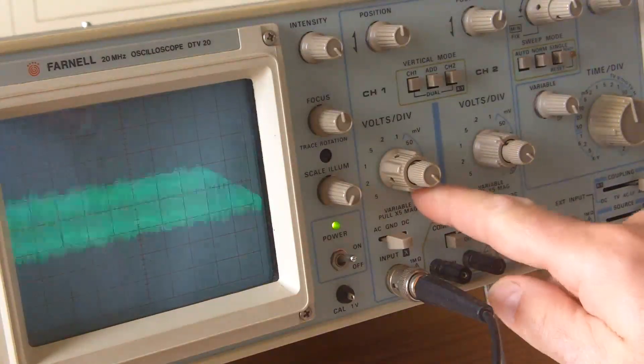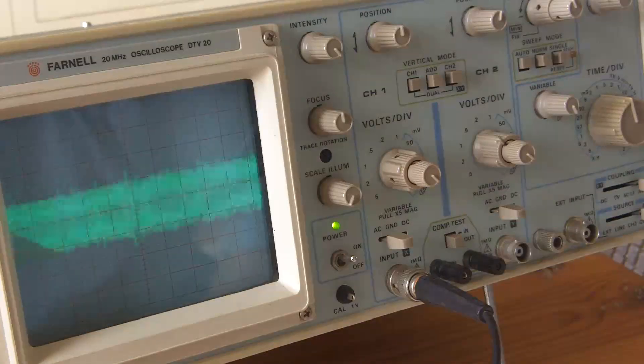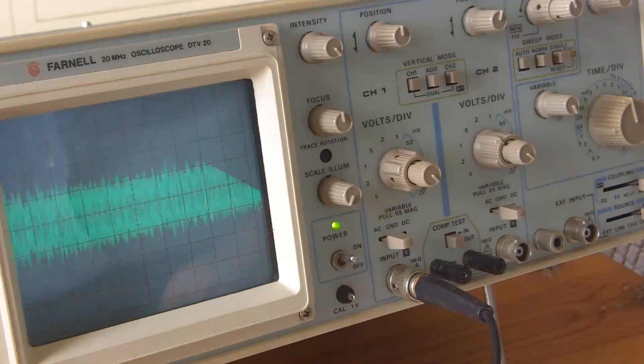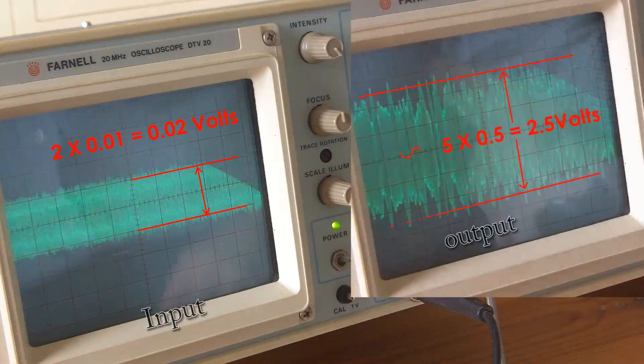And there's the input now, and that's on 10 millivolts per division. So that's a voltage gain of around 125 times for the IF amplifier stage.